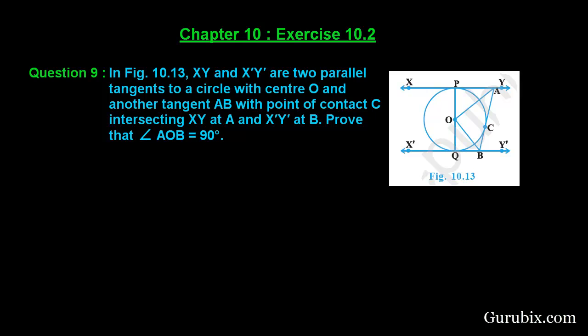Welcome friends. Let us solve a very important question of Exercise 10.2 — this is question number 9 of Exercise 10.2 of Chapter 10. The question says: in figure 10.13, XY and X'Y' are two parallel tangents to a circle with center O, and another tangent AB with point of contact C intersecting XY at A and X'Y' at B. Prove that angle AOB is 90 degrees.